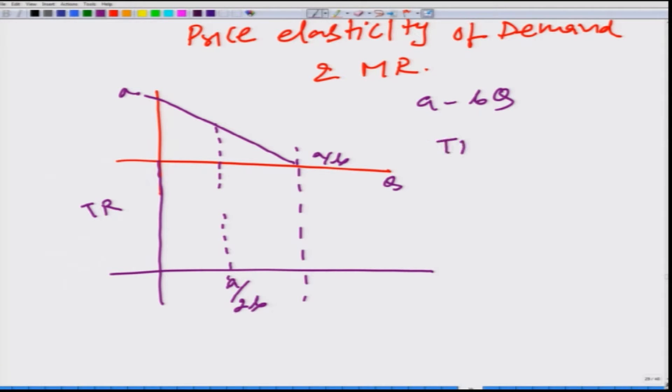What is the total revenue? Total revenue is Q multiplied by A minus BQ. So what we get is AQ minus BQ square. This is an equation of parabola or a quadratic equation. It attains 0 when Q is equal to 0 and when Q is equal to A by B. So it is 0 at these two points, so it goes something like this.